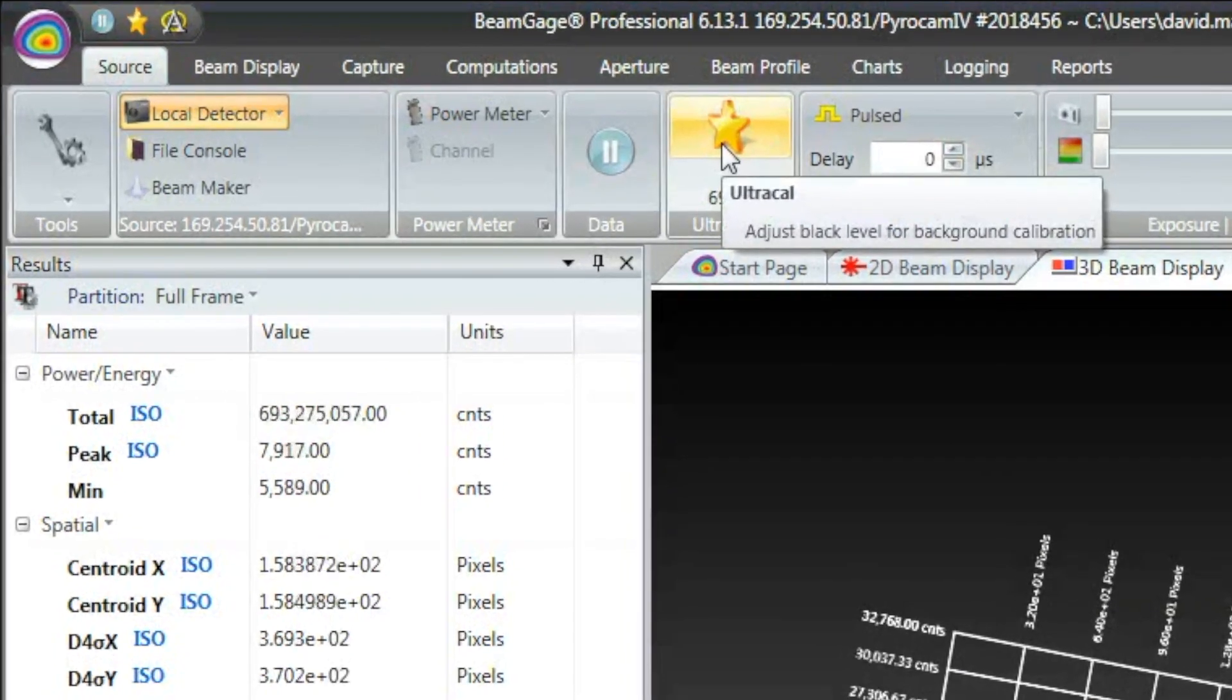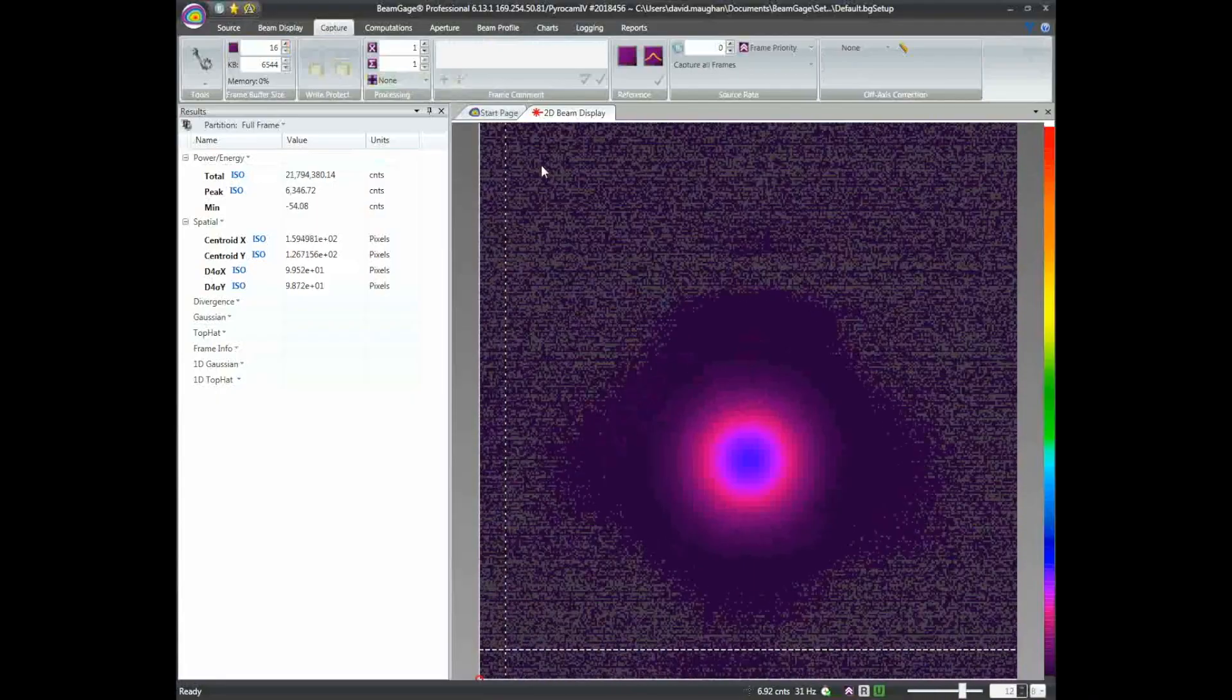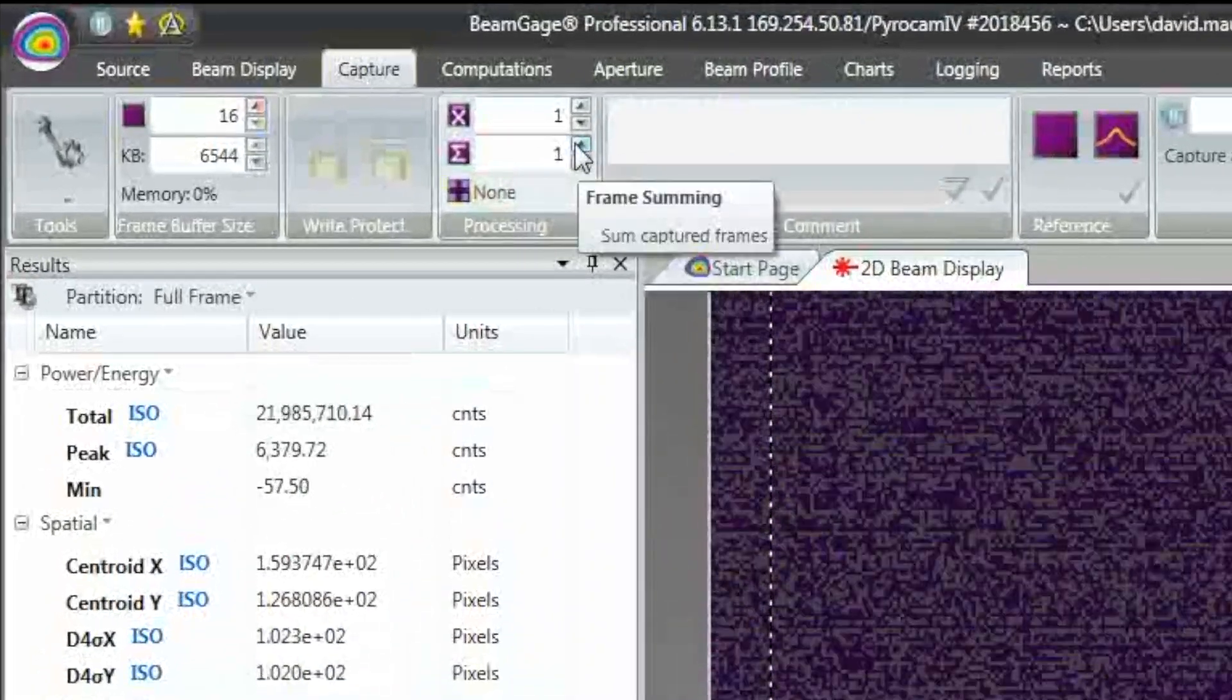In addition, with Spiricon's patented Ultracal baseline setting, multiple frames can be summed to pull a signal out of the noise. Summing and averaging frames enables viewing of beams as low as 0.5 to 1.0 milliwatts per centimeter squared.